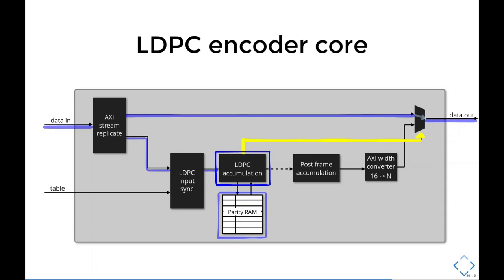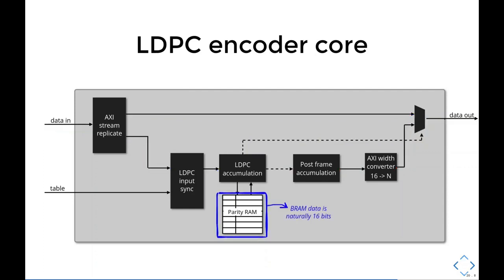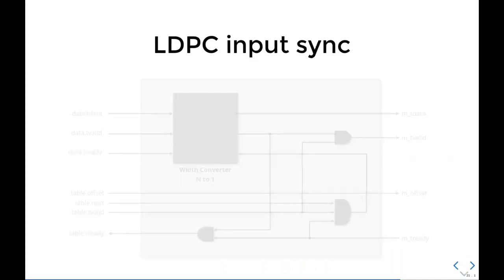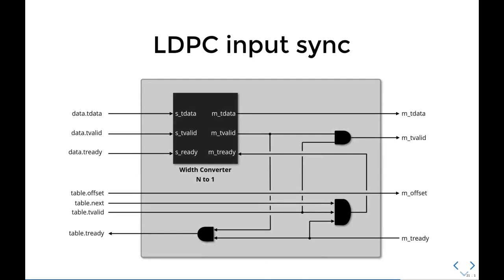The accumulation logic uses offsets from the LDPC table to XOR data in the associated positions of the parity RAM. While that's going on, it will keep the output mux selecting data from the axis stream replicate. That's the baseband plus BCH FEC passing through. Once the input frame completes, it will switch to receive data from the post-frame accumulation width conversion blocks. The frame RAM uses a block RAM internally, and block RAM's data width is naturally 16 bits, technically 18 bits because ECC. That's why we have this width converter from 16 to N, to convert parity data to the output data width.